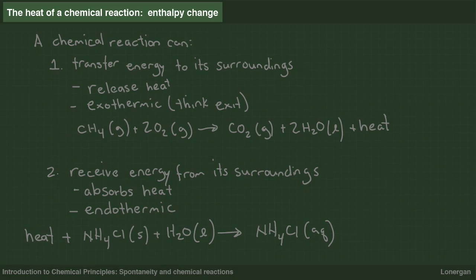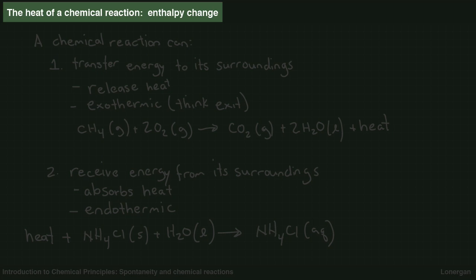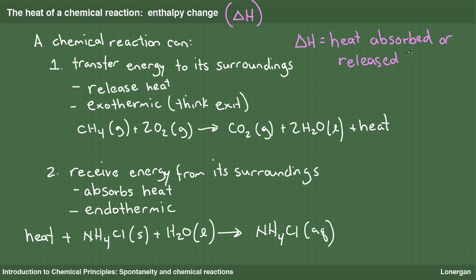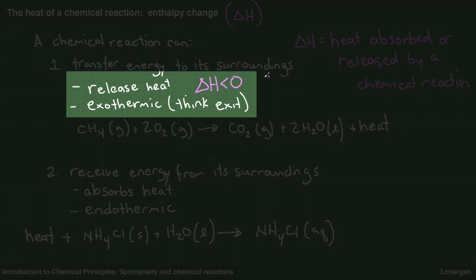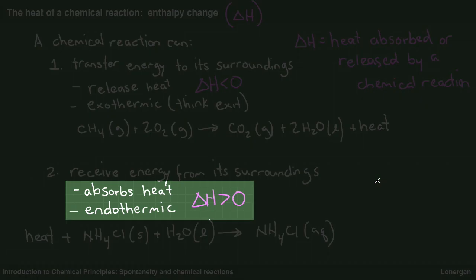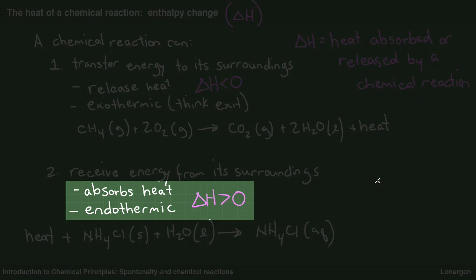The heat of a chemical reaction is called the enthalpy change of the reaction. Enthalpy is given the symbol H, and the Greek capital letter delta is used to indicate change, so the enthalpy change is given the symbol ΔH. The enthalpy change is the heat absorbed or released by the chemical reaction. If ΔH is negative, the reaction is exothermic and heat is released to the surroundings. If ΔH is positive, the reaction is endothermic and heat is absorbed from the surroundings.